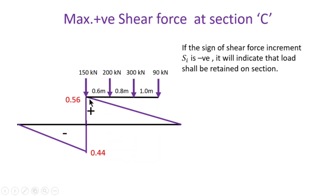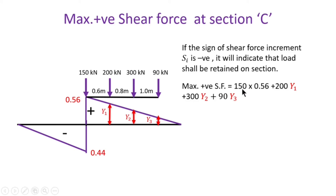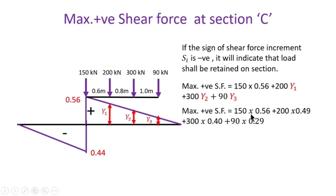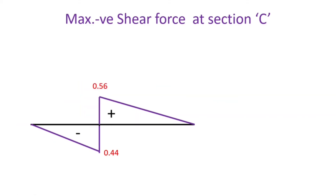Keep the 150 kN load on the section. Find ordinates y1, y2, y3 by symmetry of the triangle. Under the 150 kN load the ordinate is 0.56. Maximum positive shear force equals 150 into 0.56 plus 200 into y1 plus 300 into y2 plus 90 into y3, which gives: 150 into 0.6 plus 200 into 0.49 plus 300 into 0.4 plus 90 into 0.5, so maximum positive shear force equals 328.1 kN.